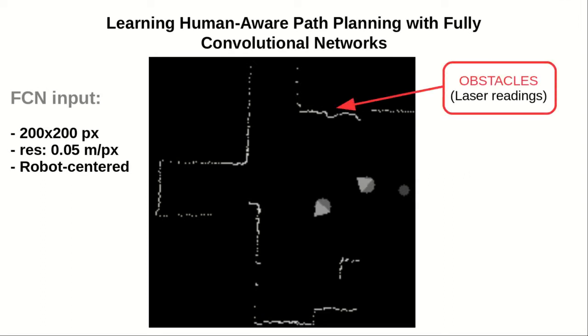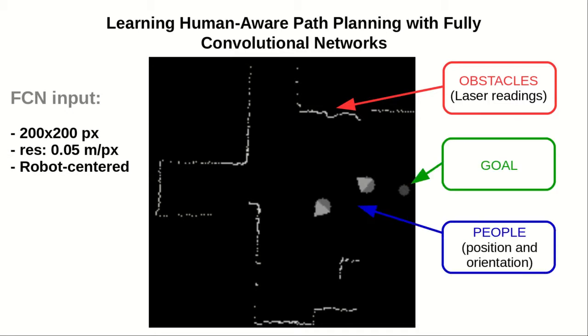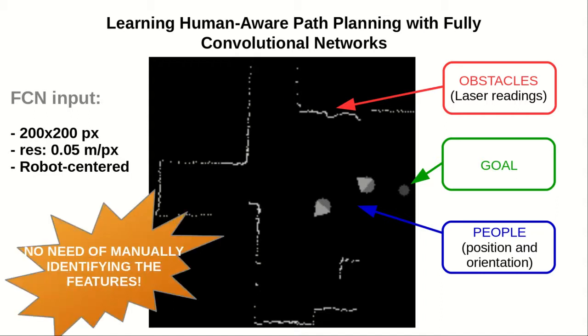As input of the network, we build an image of the scene around the robot. The network derives the features, which frees the designer from manually identifying the relevant features of the navigation task.